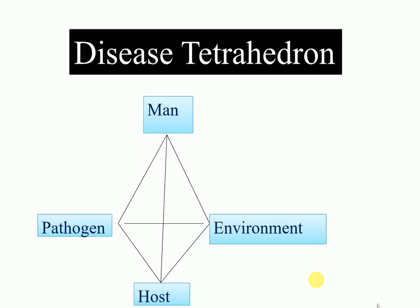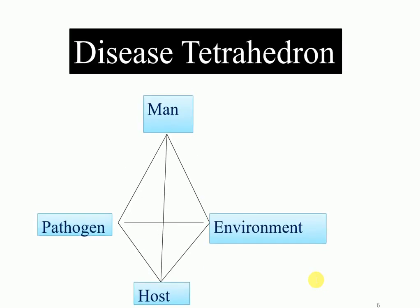Now let's discuss disease development based on the interaction of man and host, introducing the disease tetrahedron. The disease tetrahedron explains how the pathogen and environment are directly connected, and how man and host are also directly connected — man and host being essentially the same component. The pathogen is very dependent on the environment for its growth, which is why pathogen is directly connected with environment in the tetrahedron.